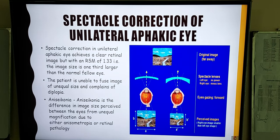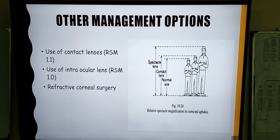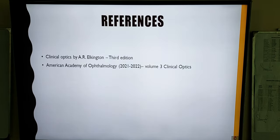As the correction with spectacles has a number of optical problems, what are the other methods which can be used? Aphakia can be corrected by the use of contact lenses, which have an RSM of 1.1. It can also be corrected by the use of intraocular lenses, which produce the same retinal image size as that of an emmetropic eye, or it can be corrected using refractive corneal surgery — all of these will be discussed in the next presentation. This presentation has been prepared from Clinical Optics by Al Kington and the American Academy of Ophthalmology.